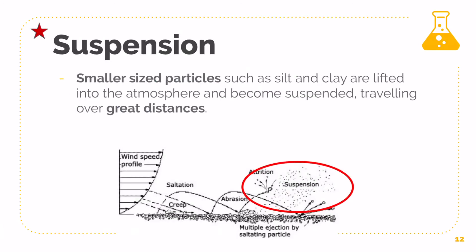Suspension is essentially smaller-sized, very light and fine particles that can get carried up and travel over long distances. These can usually account for the formation of sand dunes and loess deposits. It is because all these smaller particles travel very, very far to a point whereby the air starts to stall. As a result, the particles lose energy and then collapse and fall back to the ground.